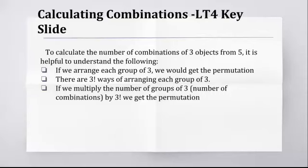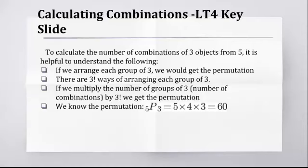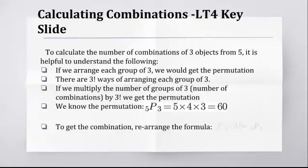We know the permutation, it's five times four times three, which is sixty. To get the combination, we use this idea. The groups of three, 5 choose 3, which is the number of groups of three, multiplied by 3!, will get you the permutation. Understanding that you don't know how many groups of three you have, but you know how many permutations you have. So if you know how many permutations you have, and you know that you're going to multiply the groups by 3!, you can get how many groups you have, which is the combination, 5 choose 3.